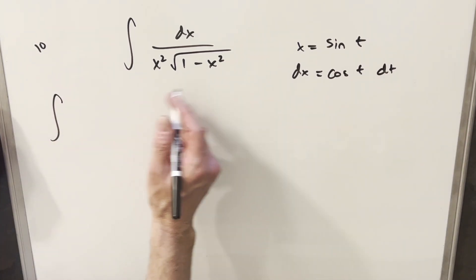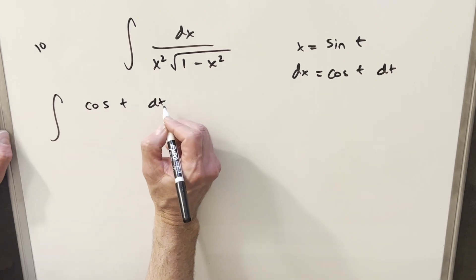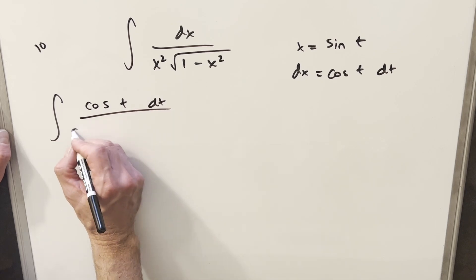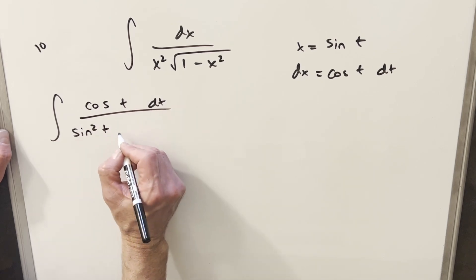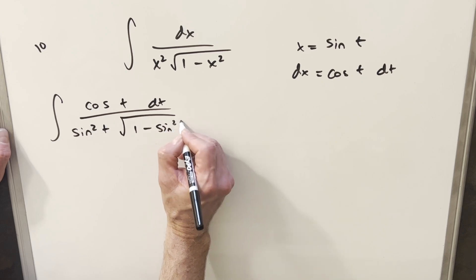So we'll go ahead with this, put the dx in the numerator. So this is going to be cosine of t dt. x squared is just going to be sine squared t. And then here we have 1 minus sine squared t.